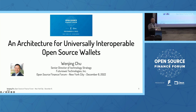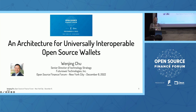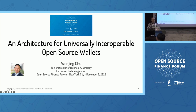So just a quick word about myself: Wenjing Chu. I'm a senior director for technology strategy at FutureWay. My internal job function is to drive strategy for metaverse, Web3, and trust — so everything sort of all together.